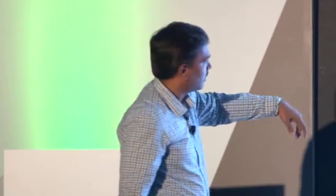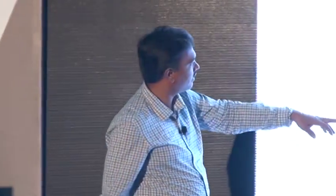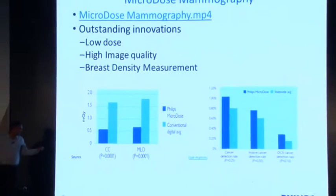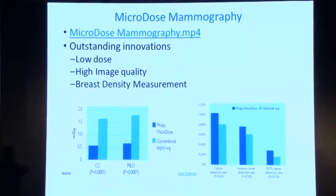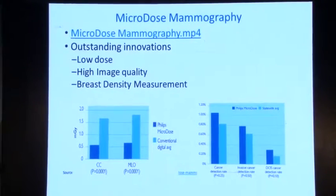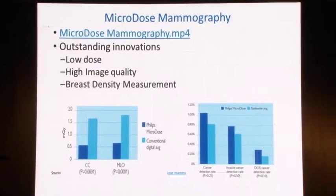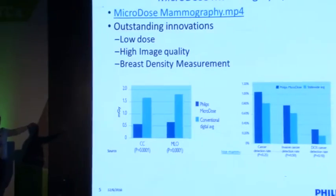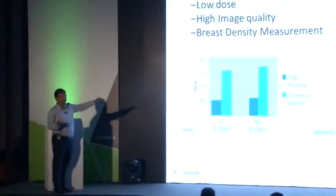Density measurement is automatically provided with each scan. A comparison chart shows a huge difference in dose between competitors and Philips. Dose and image quality typically move in opposite directions — reducing dose reduces quality — but here we managed both simultaneously, which increases detection rate.